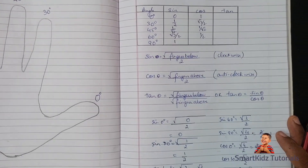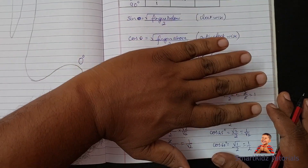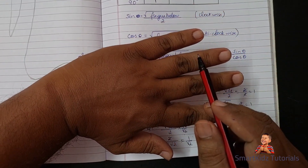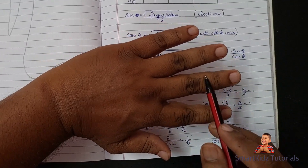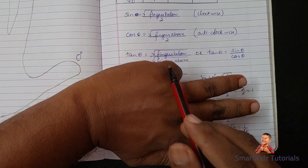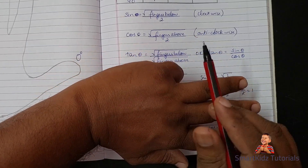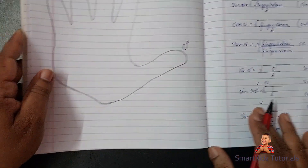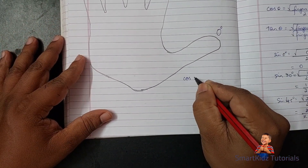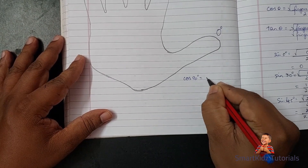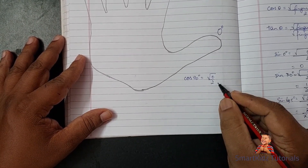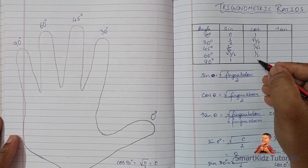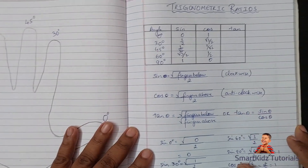For cos of 90 degrees, I close the little finger. How many fingers are above 90? Zero. So it is square root of 0 upon 2. Square root of 0 is 0, and 0 upon anything is 0. So cos of 90 degrees is 0.